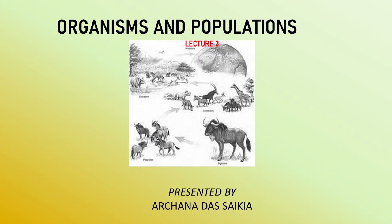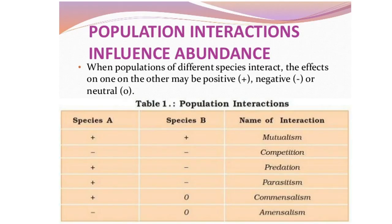Moving ahead to the third lecture in the chapter 'Organisms and Population', today we shall talk about population interactions. Living organisms like animals, plants, and microbes cannot live alone — they always need to interact with each other. In any ecosystem, any population cannot survive alone; they will always interact, whether for some positive effect, negative effect, or sometimes with no effect at all.